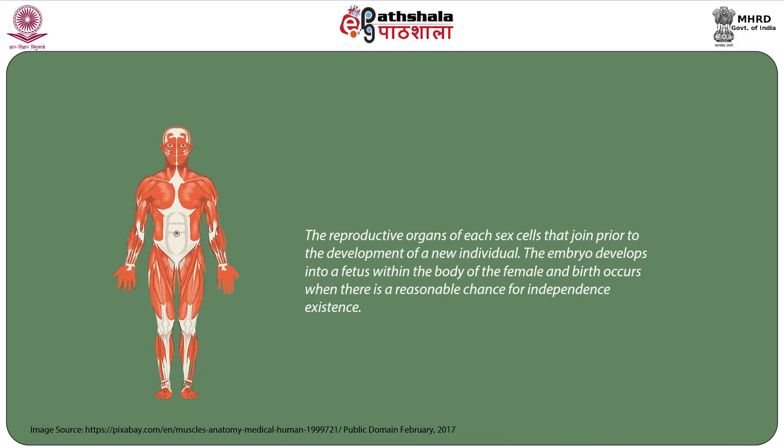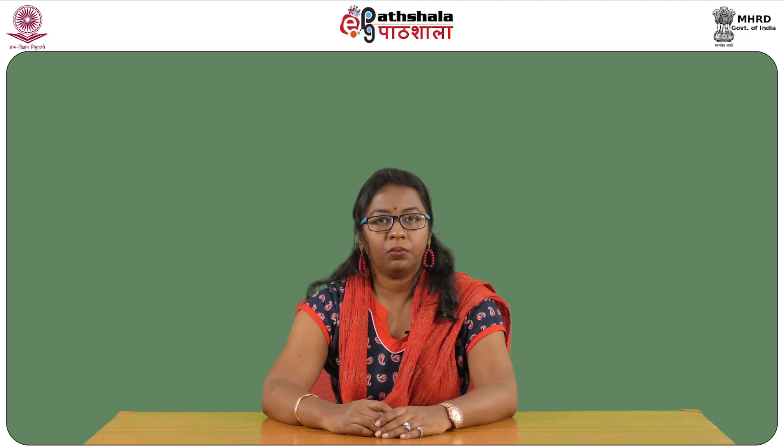Human beings are either male or female. The reproductive organs of each sex produce cells that join prior to the development of a new individual. The embryo develops into a fetus within the body of the female, and birth occurs when there is a reasonable chance for independent existence. The method of human reproduction is an adaptation to life on land.